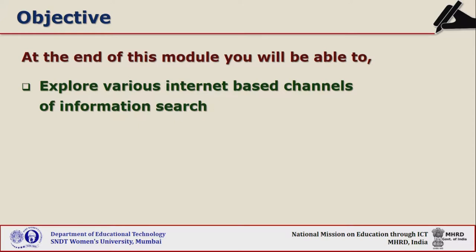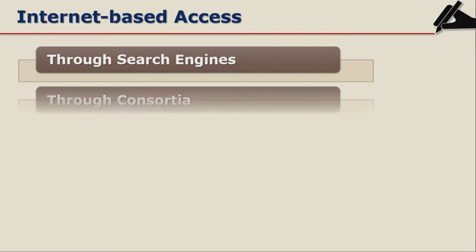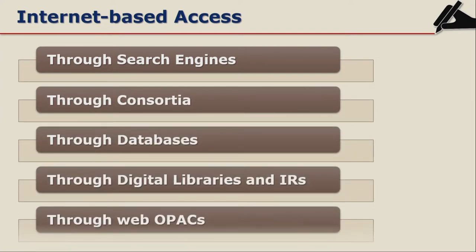At the end of this module you will be able to explore various internet-based channels of information search. You can get internet-based access through search engines like Google Scholar, through consortia like Eshoda Sindhu or JSTOR or JGate, through databases like ERIC, through digital libraries like the National Digital Library of India, or through web OPACs of different libraries, and even through institutional repositories like Kautilya or IIT institutional repository.